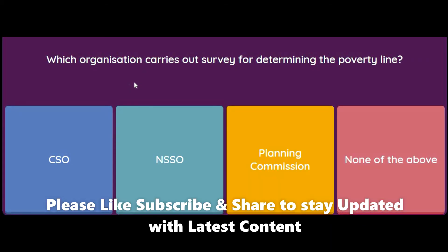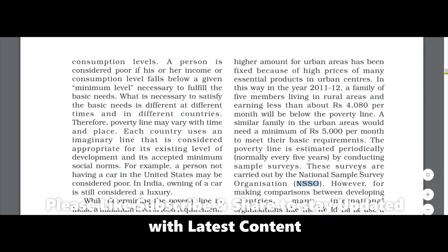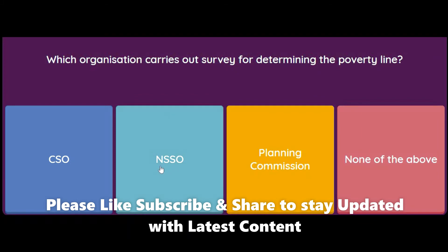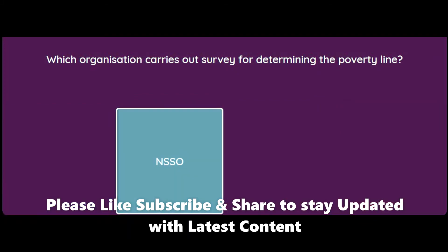Which organization carries out surveys for determining the poverty line? CSO, NSSO, Planning Commission, or none of the above? The answer is NSSO. Just referring to the textbook content — these surveys are carried out by the National Sample Survey Organization for the poverty line. So the correct answer is NSSO.